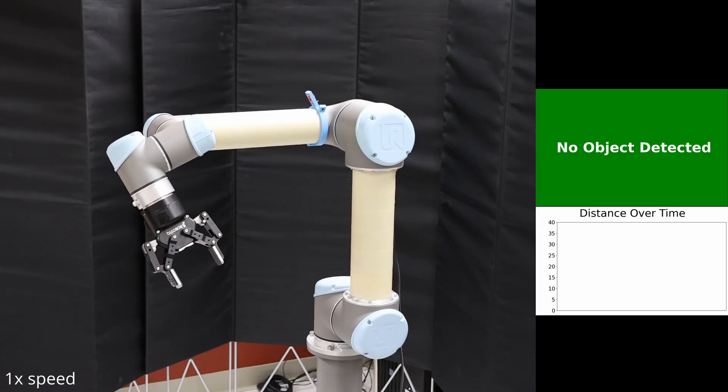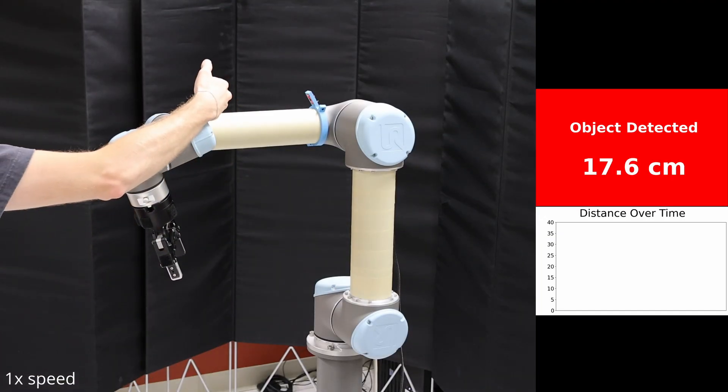After capturing reference images, we begin object detection with our method. As the robot moves, no objects are detected regardless of joint state.